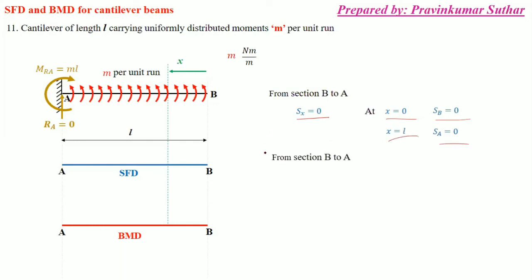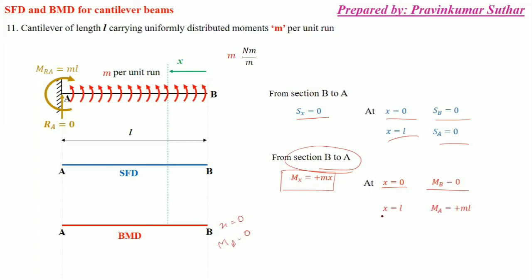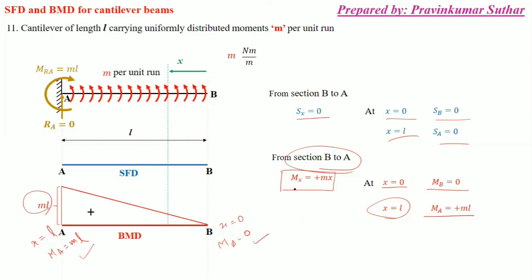For the bending moment from B to A (free to fixed), Mx equals plus mx. So the bending moment depends on x. At x equals zero, the bending moment at point B equals zero. At x equals l, the bending moment at point A equals mL. As you can see, this gives a triangular bending moment diagram with maximum bending moment mL at the fixed end. There is no shear force in this case.